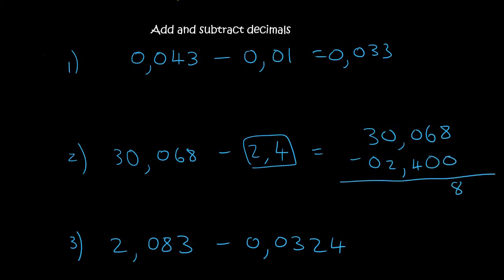8 minus 0, 8. 6 minus 0, 6. 0 minus 4 over here. You can't. So you borrow. But now this one can't borrow either, because it is a 0. So you borrow from here, which becomes a 2. You add it to this one, which now becomes 10.